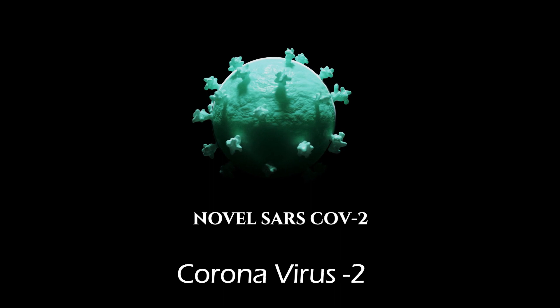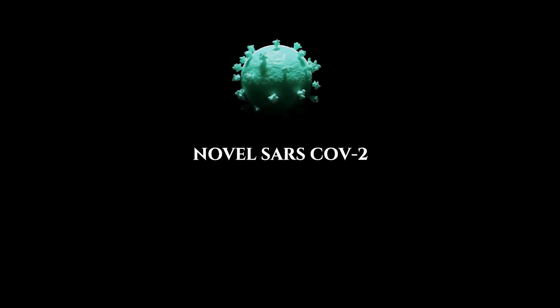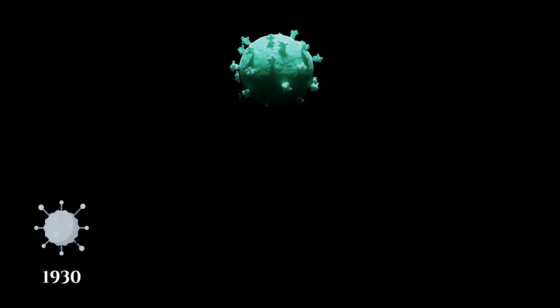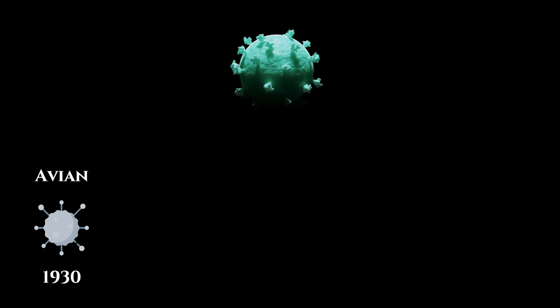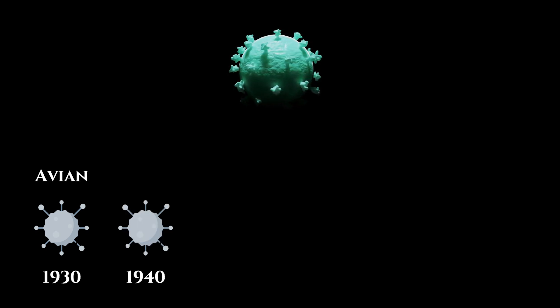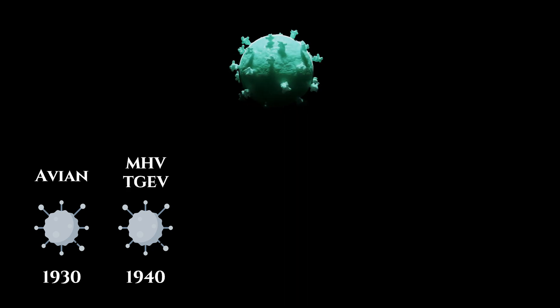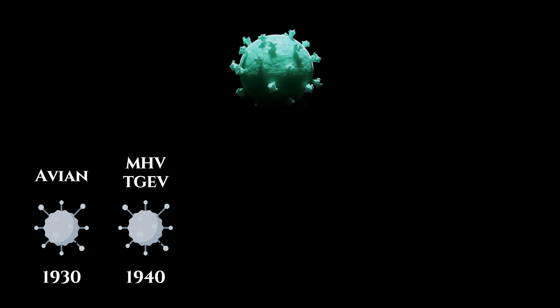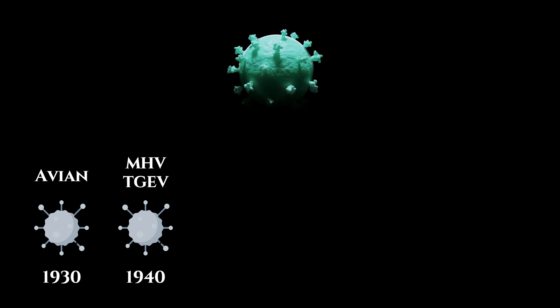Let's see the history of the coronavirus. The first coronavirus was discovered in the 1930s, named as avian coronavirus or infectious bronchitis virus, which infected birds. In 1940, two more animal viruses, namely mouse hepatitis virus and transmissible gastroenteritis virus, were discovered.